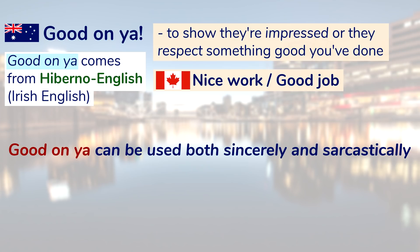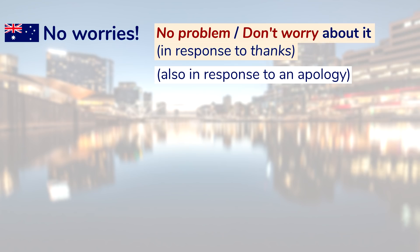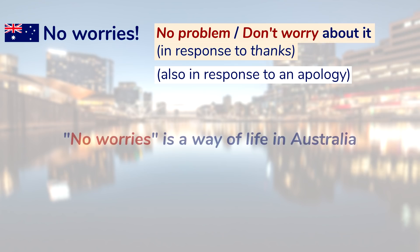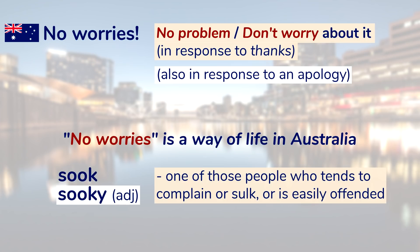If someone's bragging, you might sarcastically say 'Good on ya, mate.' When you say thanks, an Aussie might reply 'No worries' — like saying 'no problem' or 'don't worry about it.' 'No worries' can also respond to an apology, and is something of a national motto — Aussies tend to be lighthearted and not take things too seriously. But if you complain, sulk, or are easily offended, you might be called a 'sook' — or as an adjective, 'sookie.'